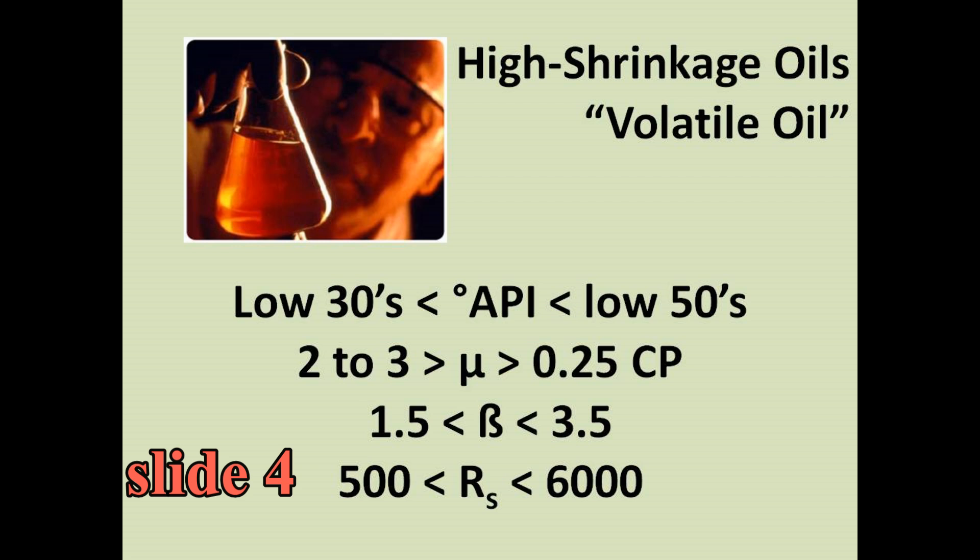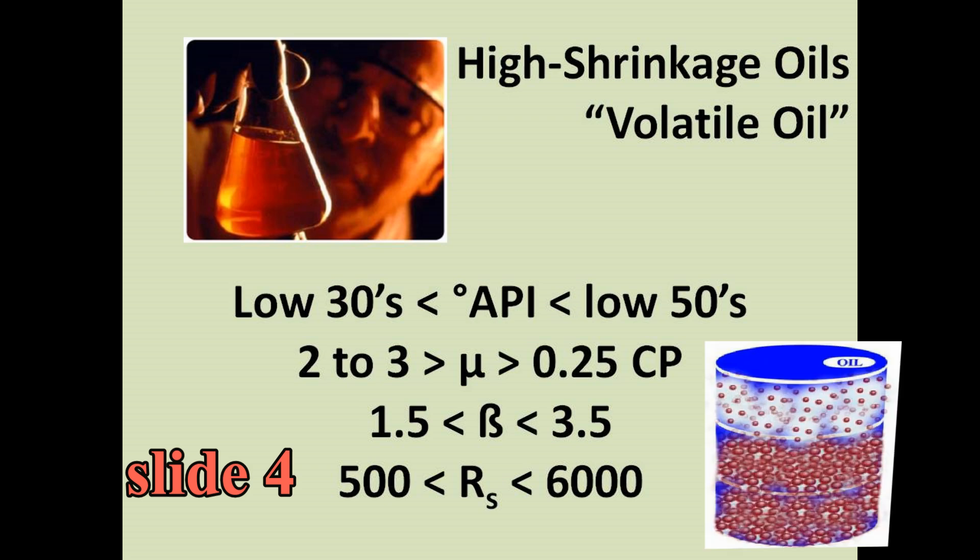Slide four shows high shrinkage oils, or volatile oil. As the word volatile implies, this substance can easily change into gas, so its shrinkage is higher, and its RS is also higher. A large volume of gas is usually found in volatile oils.